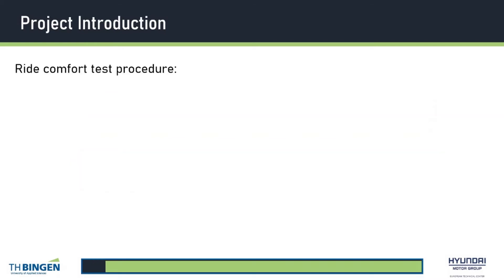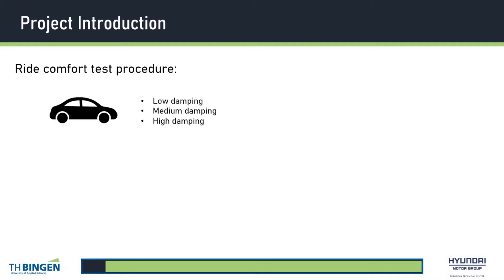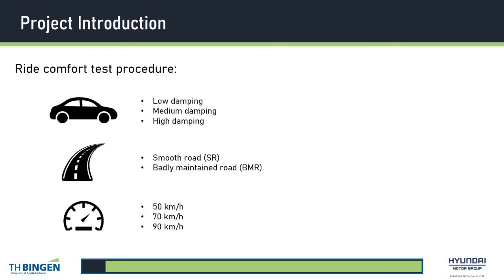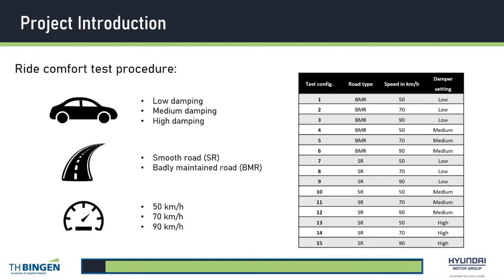The Ride Comfort test procedure which needed to be simulated was conducted as such. The test vehicle was equipped with CDC dampers and the damper ECU was flashed so that it can be switched between three constant damping levels, namely low, medium, and high damping. For the measurements, the vehicle was driven on two different roads — a smooth and a badly maintained road — at 50, 70, and 90 kilometers per hour. A total of 15 test configurations were measured, as shown in this table.